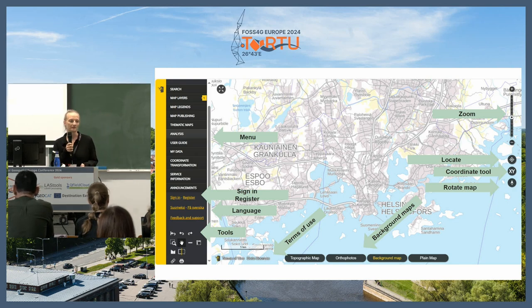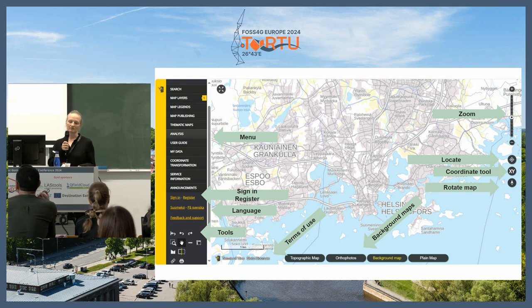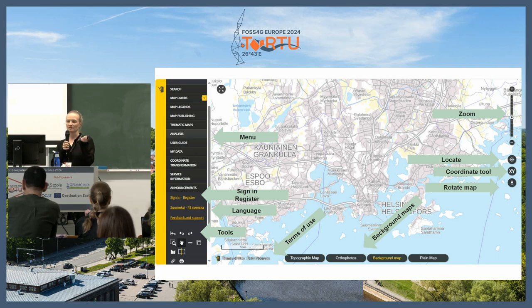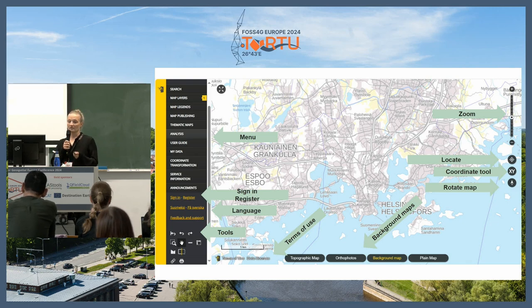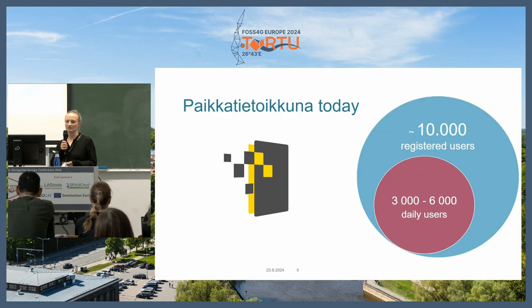You can locate yourself, there's an XY tool, you can rotate the map, there's a 3D possibility. You've got different kinds of tools like swipe tools. Obviously you need to find the terms of use, and then there are the background maps. Quite a lot of things, but the main thing is you can view nearly all data that exists in Finland in one place.